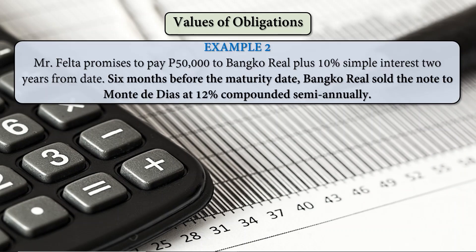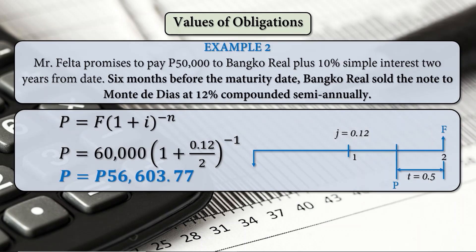For our second example, using the compound present value formula again: F is 60,000 times (1 plus 0.12 divided by 2) raised to negative 1, because 0.5 times 2 is negative 1. That equals 56,603 pesos and 77 centavos — our present value 6 months before the maturity date using the simple interest future amount.